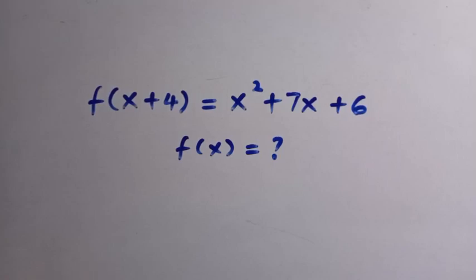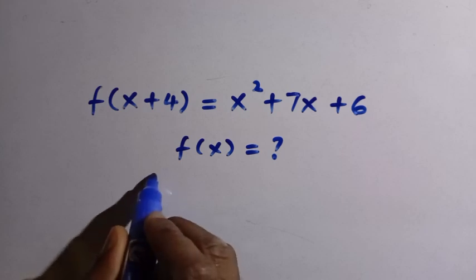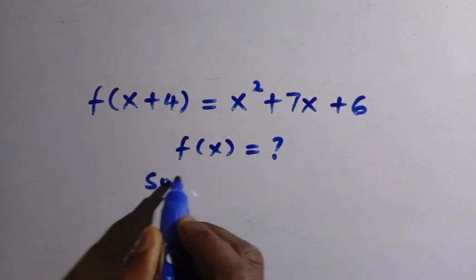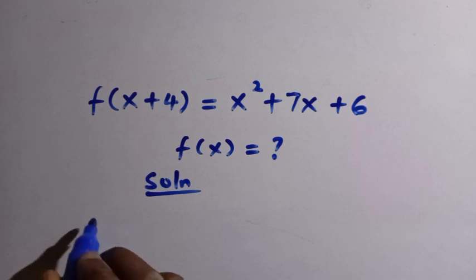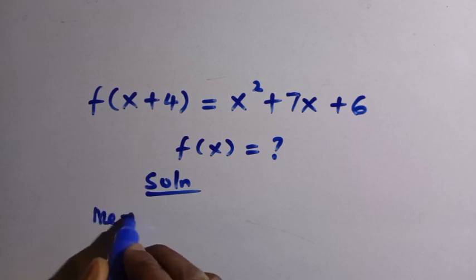Good day viewers, you are welcome. How to solve this nice functional equation: we have f(x+4) equals x squared plus 7x plus 6. To solve this, we will use two different methods.